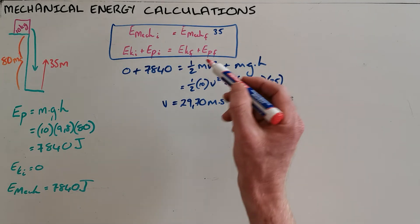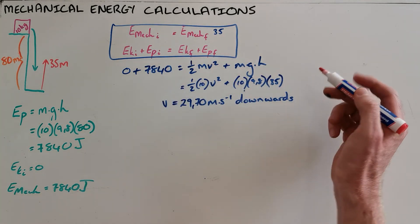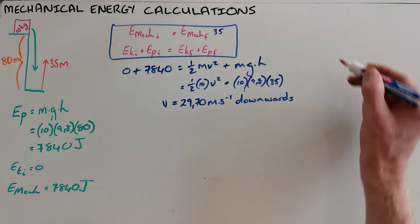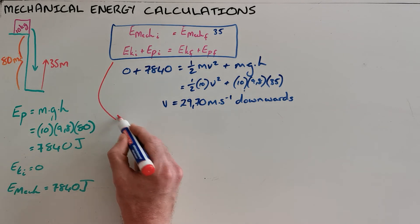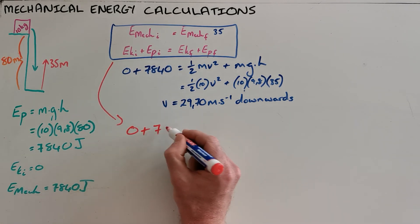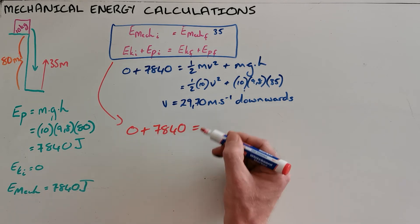The difference now is that we point out that at the end the potential energy must be zero as well. So we use the same calculation from here where we say the initial kinetic energy was zero, the initial potential energy remains unchanged.